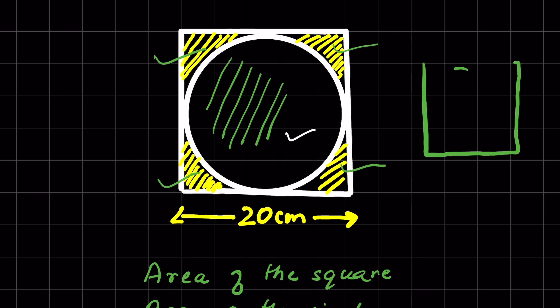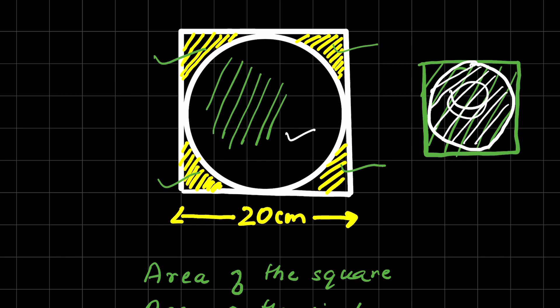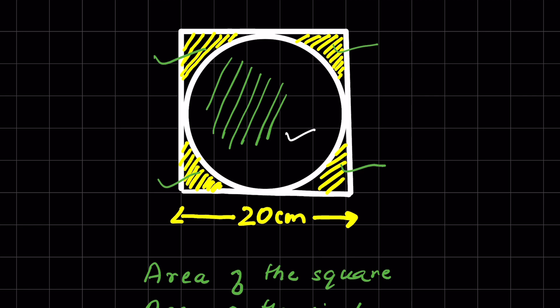For example, if this is the square that is given, then area of the square is this. Then area of the inscribed circle will be this. And if we subtract this region from the area of the square, then we can get this part which is the required region that we need to find.